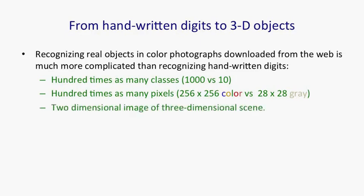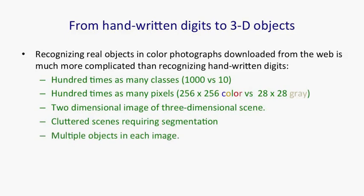Another factor is that in real scenes you have a two-dimensional image of a three-dimensional reality, so a lot of information has been lost. Real scenes also have clutter of a kind that doesn't occur in handwriting. In handwriting you can have overlapping letters requiring segmentation, but you don't have occlusion by opaque objects, many different object types in the same scene, or the lighting variations that occur in real scenes.